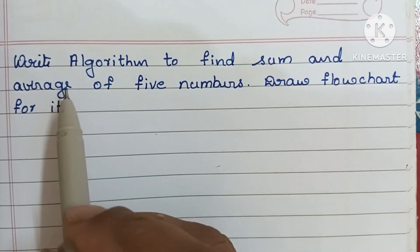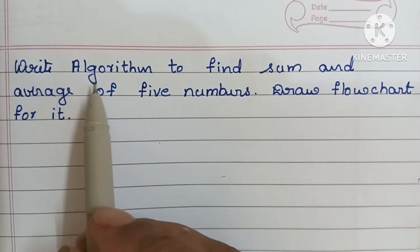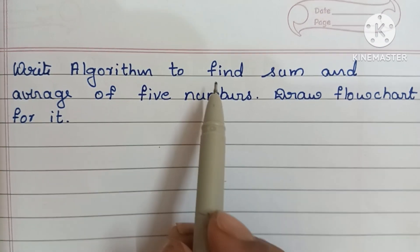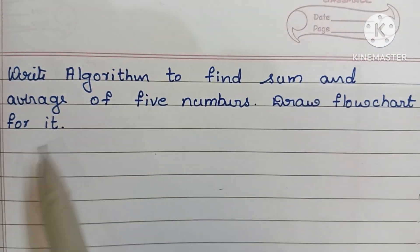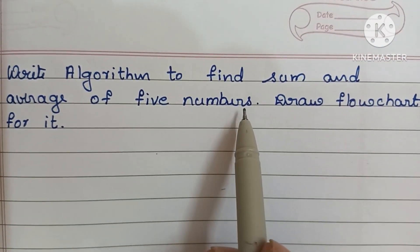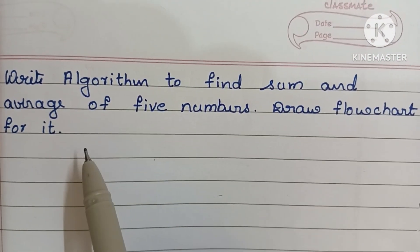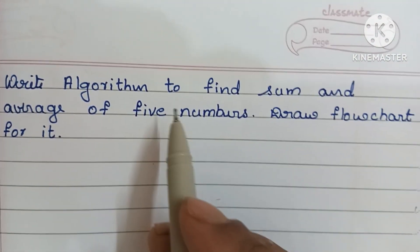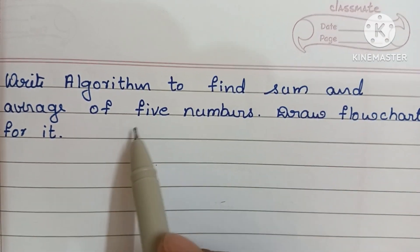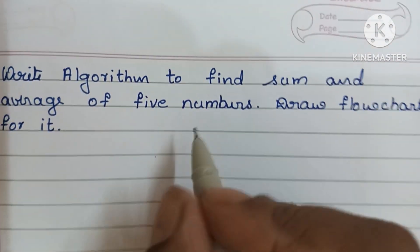Hi guys, in this video we're going to learn how to write an algorithm to find the sum and average of five numbers, and draw a flowchart for it. Here we have to find sum and average of five numbers.